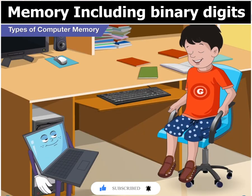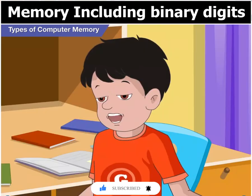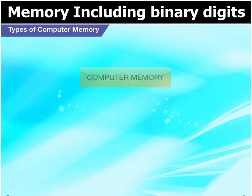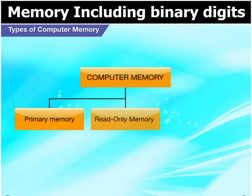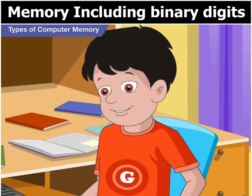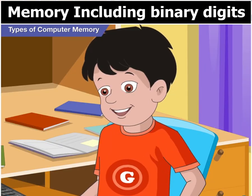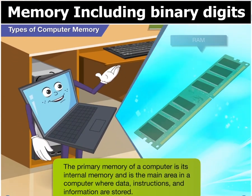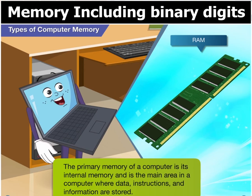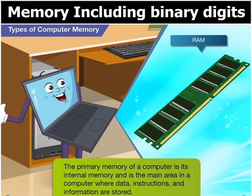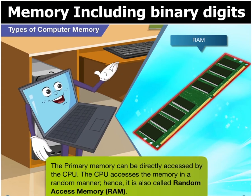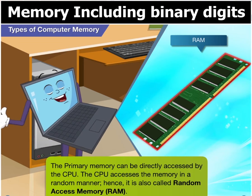Toggle, this chart seems very complex. Can you explain it to me please? Sure, Goggle. A computer has three types of memory: primary memory, read-only memory or ROM, and secondary memory. The primary memory of a computer is its internal memory and is the main area where data, instructions and information are stored. This memory can be directly accessed by the CPU. The CPU accesses the memory in a random manner, hence it is also called random access memory.